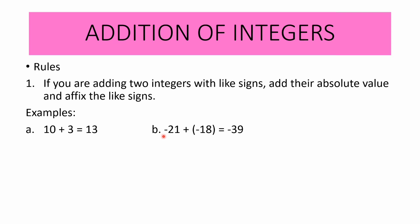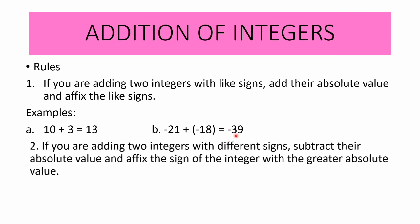For example letter B, we have negative 21 plus negative 21. Take note that we are adding two integers with like signs, and the like sign is negative. So we add their absolute values: 21 plus 18 is 39, and we copy the like sign which is negative. Therefore, the sum is negative 39.